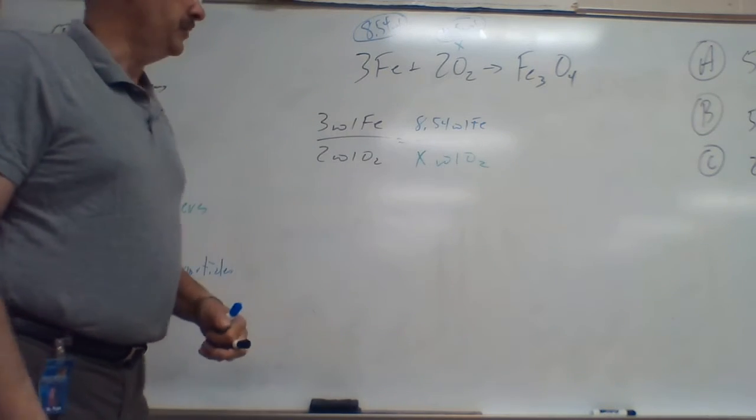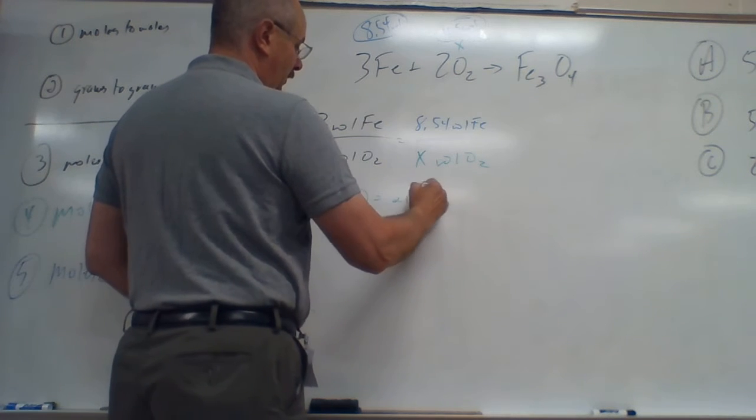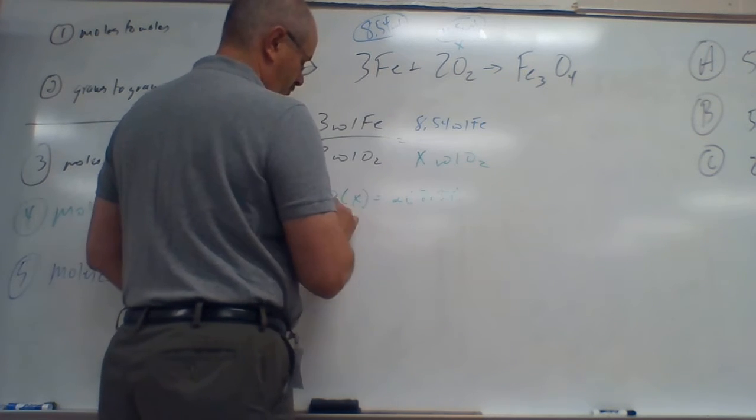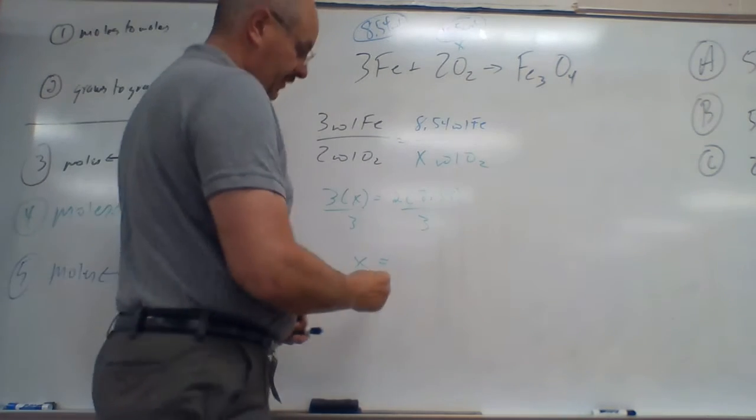So if you cross multiply you get 3 times x equals 2 times 8.54. Divide by 3 on both sides and x ends up equaling 5.69.